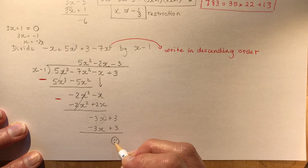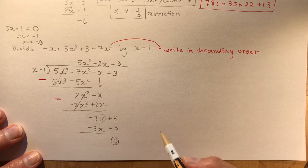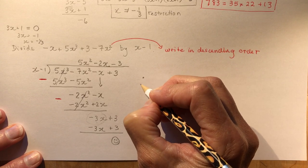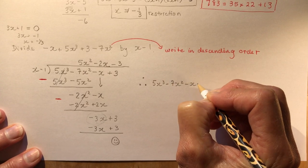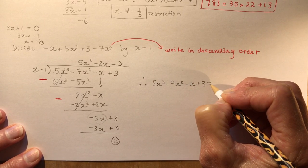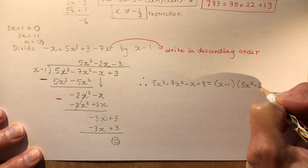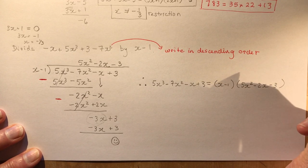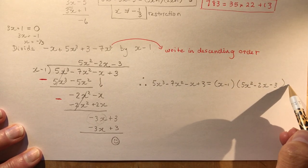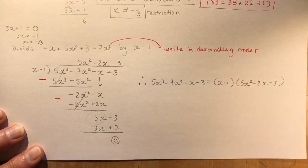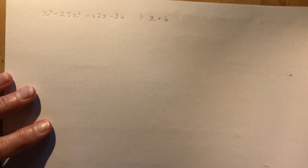When you subtract, you get zero remainder — which is great, especially when we're finding factors. The division statement is: 5x³ minus 7x² minus x plus 3 equals (x minus 1) times (5x² minus 2x minus 3), with no remainder to add. Also, the restriction is x is not equal to 1, because 1 minus 1 would be zero.